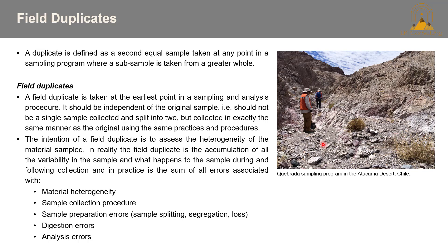Unfortunately, the error associated with the sample collection procedure is probably the hardest to quantify. A biased sample collection process will always produce an equivalently biased field duplicate. Due to the nature of some sample types, it's not always possible to take field duplicates simultaneously and they have to be taken sequentially. Examples include collection of a second soil sample from a second hole within five to ten meters of the first, a second random rock chip sample from the identical area, or a second sequential water sample from the same location in a river or drill hole.